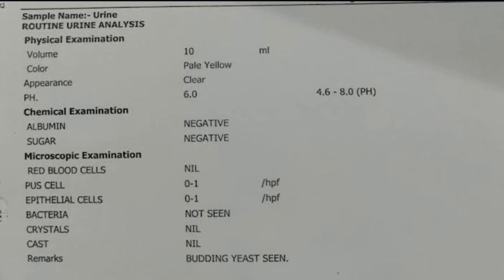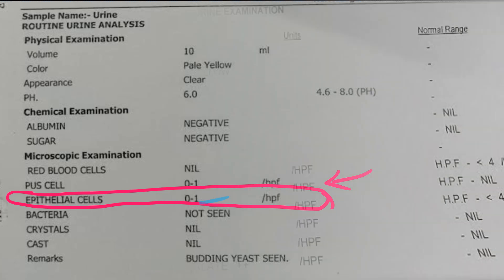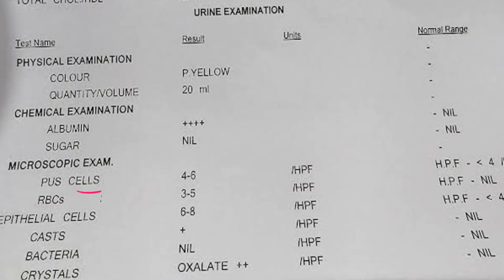This is the count of how many epithelial cells are seen under the high power field. Automated machines are available but most labs perform this under the microscope and comment on it manually. Another sample report shows six to eight epithelial cells per high power field, with a normal reference range provided — though some labs may not include the reference range.